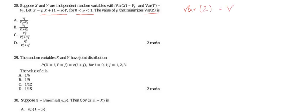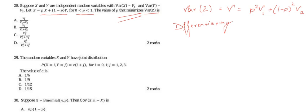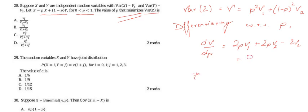Variance of Z can be written as V = p²·v1 + (1−p)²·v2. Now differentiating with respect to p to find the minimum value, we get dV/dp = 2p·v1 + 2p·v2 − v2. We equate this to 0 and solving further, we get p = v2/(v1 + v2) as the minimizing value.